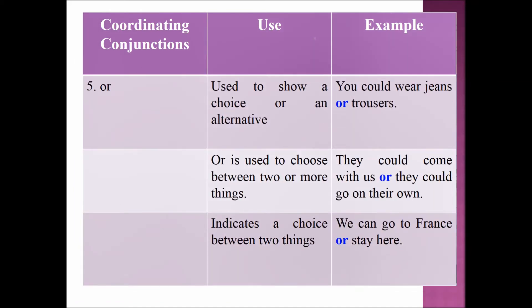Next, let's move on to OR. OR is used to show a choice or an alternative. Example sentence: 'You could wear jeans or trousers.' OR is used to choose between two or more things — example: 'They could come with us, or they could go on their own.' OR also indicates a choice between two things — example: 'We can go to France, or stay here.'